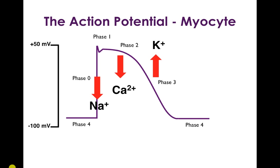Phase 1 isn't particularly important, but there's a little dip there. Phase 2 in myocytes is important because it is governed by calcium conductance — extracellular calcium stimulates calcium release from the sarcoplasmic reticulum, maintaining the positive charge of the action potential, which is critical for sustaining contraction of the myocyte. Phase 3 is where the myocyte repolarizes, governed by increasing conductance to potassium channels. Finally, the myocyte returns to rest at phase 4 when the action potential is fully repolarized.